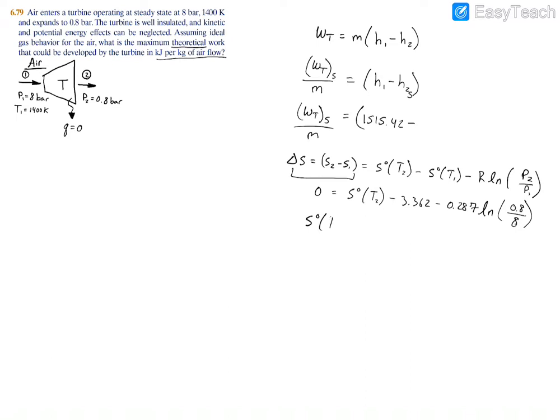And when you do that, you'll have s naught of T2 is equal to 2.7012, and that's kilojoules per kilogram Kelvin.